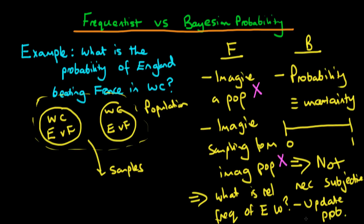In summary, because we've abandoned the frequentist view of probability representing a long-run relative frequency of an event occurring, and moved over to the Bayesian view where probability represents uncertainty, we've actually gained a lot — because now we're able to continue using probability to make inferences about what's going on. Furthermore, we know how to update our view using Bayes' rule.